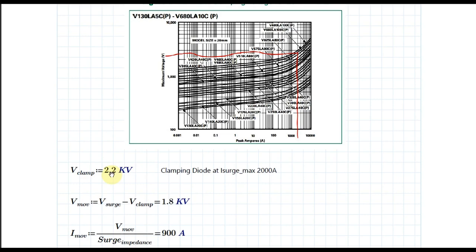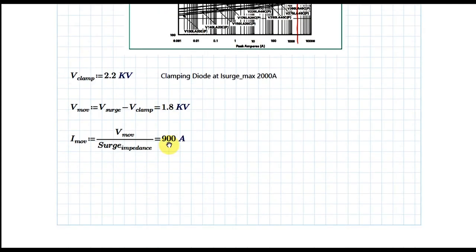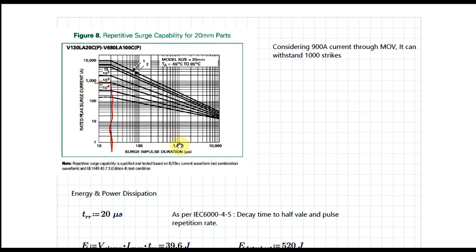For 2000 A, your maximum clamping voltage is approximately 2.2 kV, or 2200 V. The voltage across the MOV is: V_MOV = V_surge − V_clamp = 4 kV − 2.2 kV = 1.8 kV. The current through the MOV is: I_MOV = V_MOV / Z_surge = 1.8 kV / 2 Ω = 900 A.